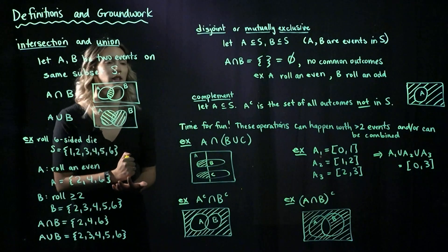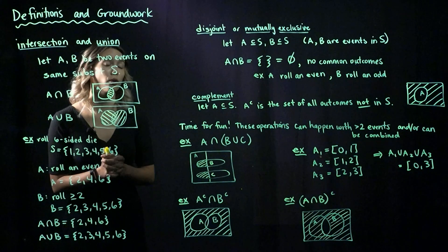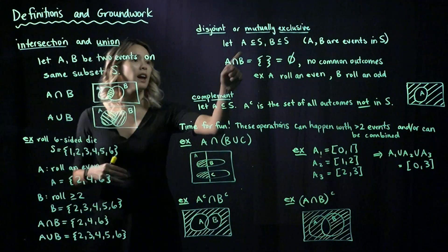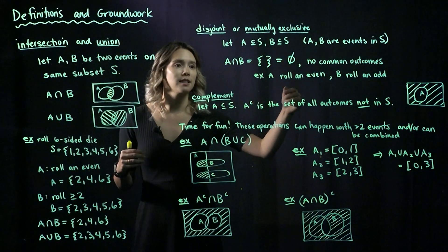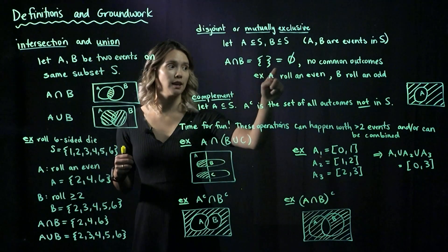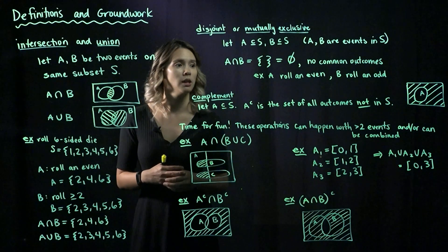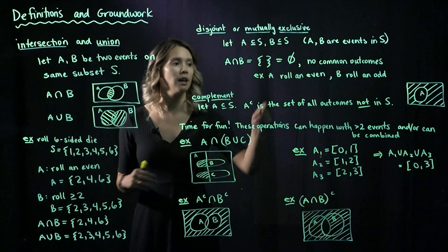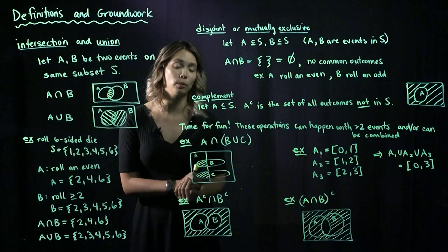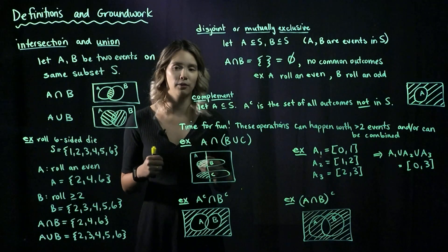Next, we're going to look at disjoint, also called mutually exclusive. Two events are disjoint if they have no common outcomes. If A and B are events in S, then A intersect B equals the empty set if and only if A and B are disjoint. An easy example: with a six-sided die, if A is rolling even and B is rolling odd, then A and B are disjoint — you cannot roll both even and odd on the same roll.